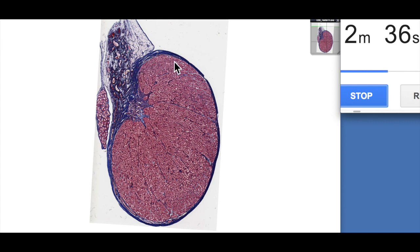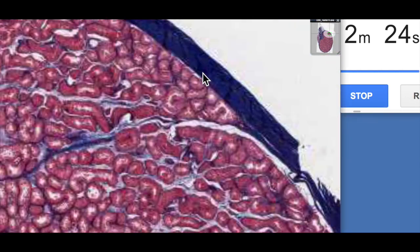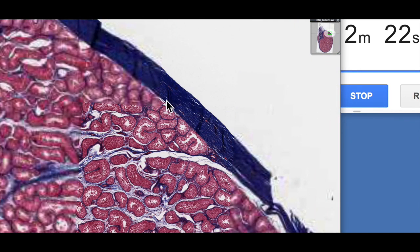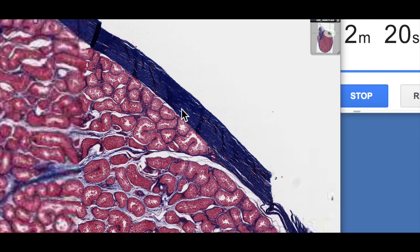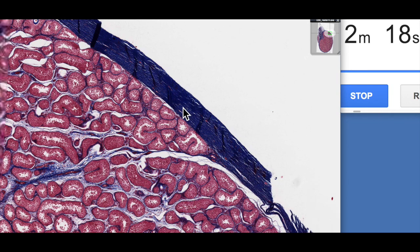You can see this is a trichrome stained section. Blue is collagen and you can see this very thick dense blue layer around the outside of the testis. This is known as the tunica albuginea, or the white layer. If we have a look at a little bit higher magnification here you can see it's a very thick dense connective tissue layer.